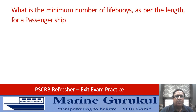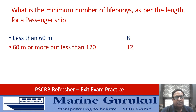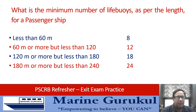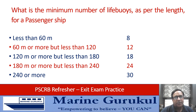What is the minimum number of lifebuoys as per the length of a passenger ship? Less than 60 meters: 8; 60 to 120 meters: 12; 120 to 180 meters: 18; 180 to 240 meters: 24; and more than 240 meters: 30. For passenger ships the requirement is higher than for cargo ships.